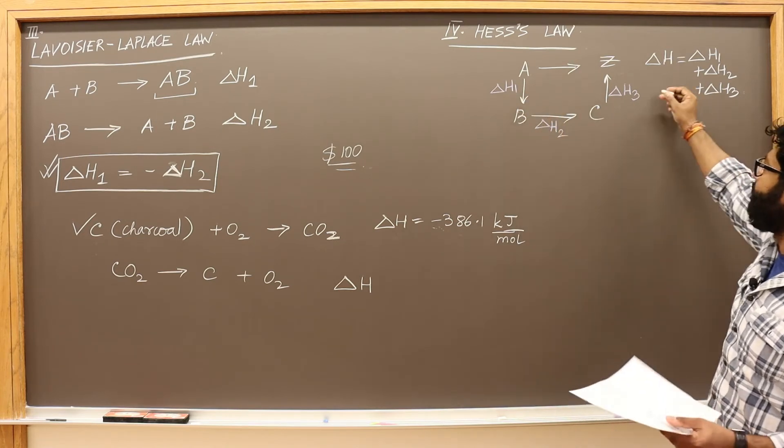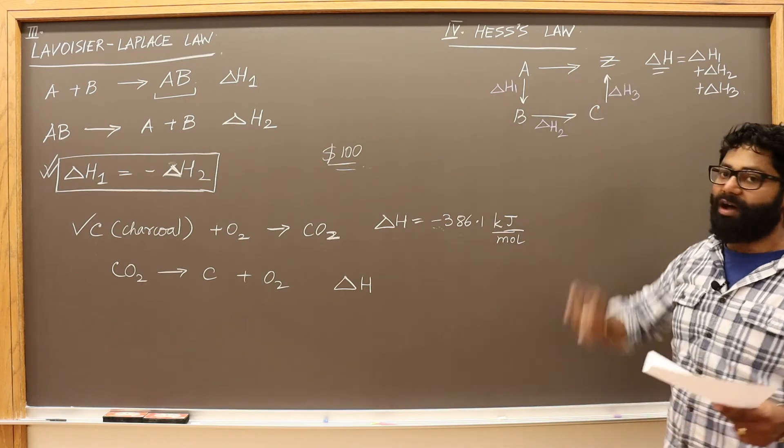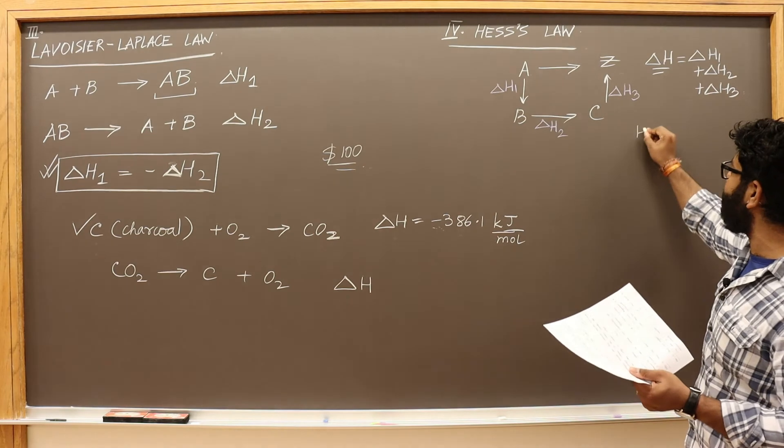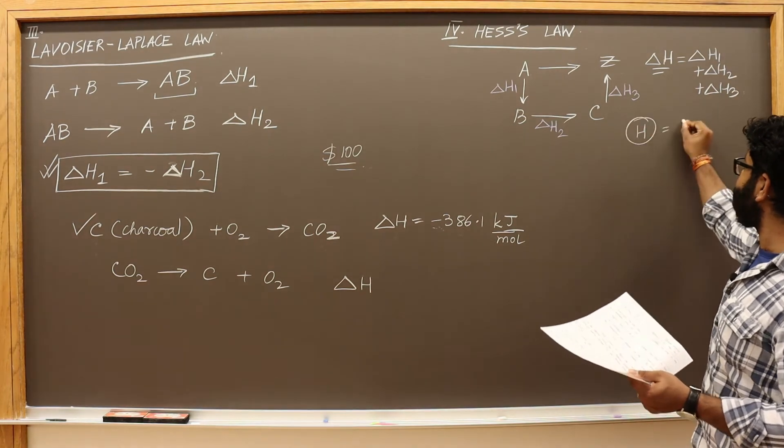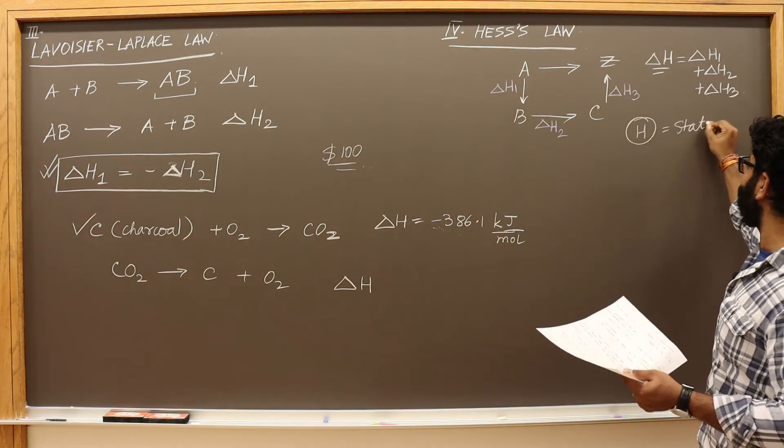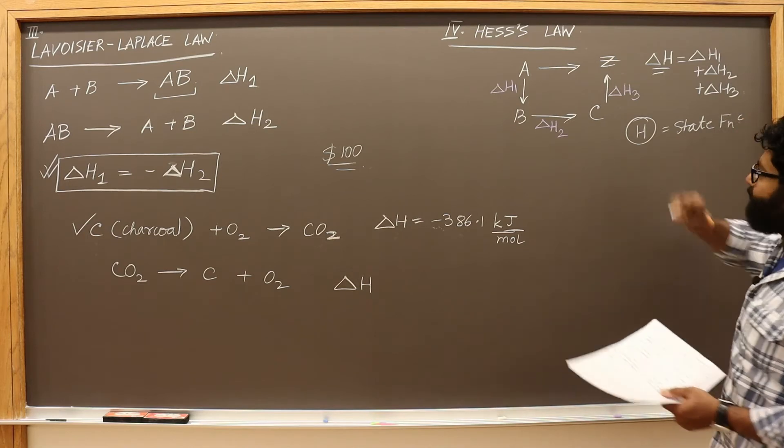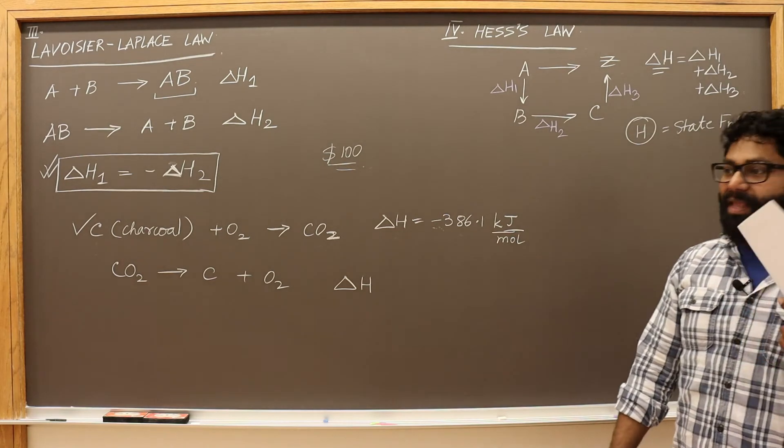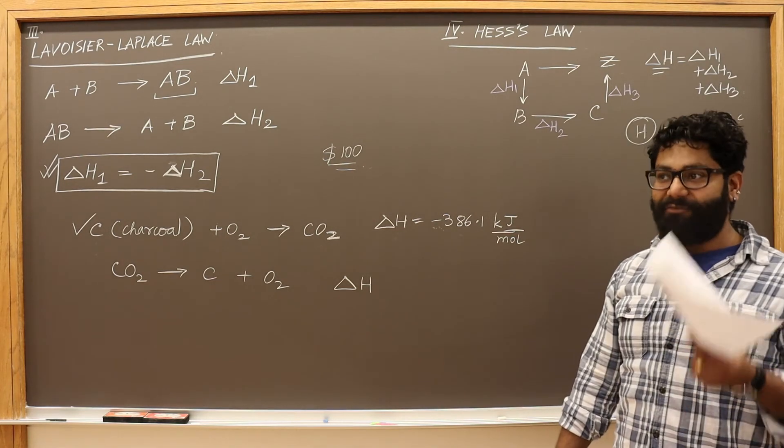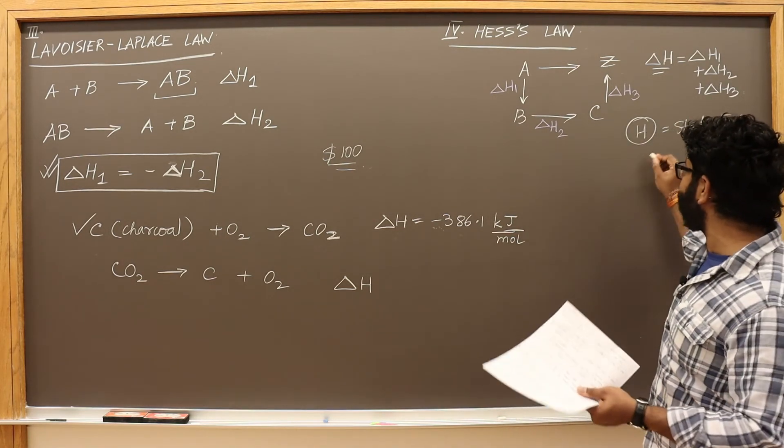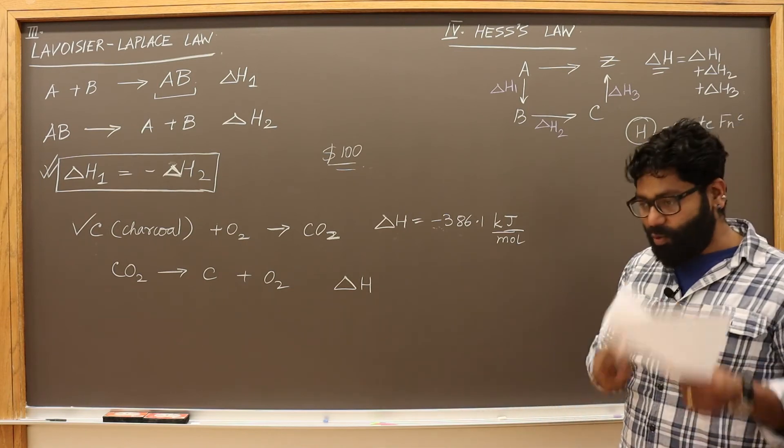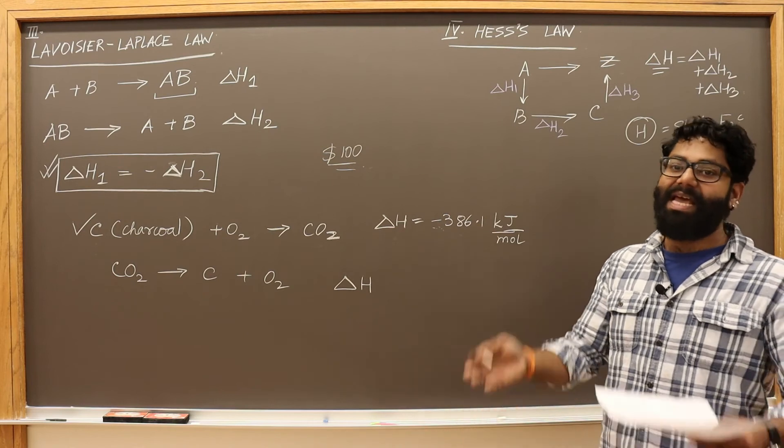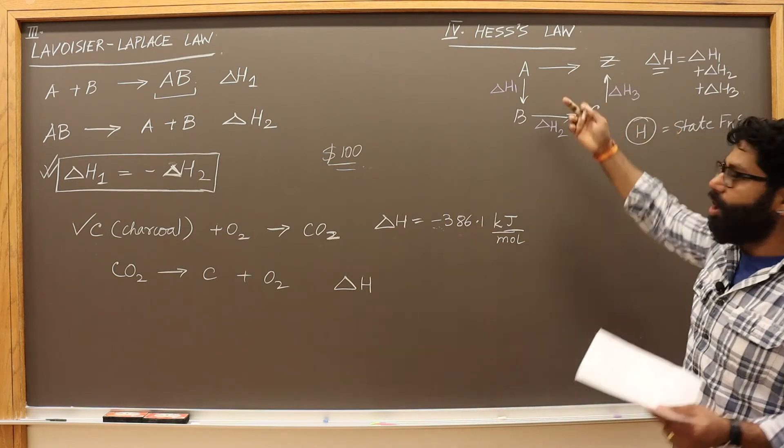If this is not possible, you just add these and you'll get the delta H of the reaction, extremely important. And why is this possible? Because enthalpy is a state function. Remember, state function, where the path of going from one to the other is not defining—the enthalpy change is not dependent on the path. It is only dependent on the initial and the final state of the system. And that is why Hess's law holds.